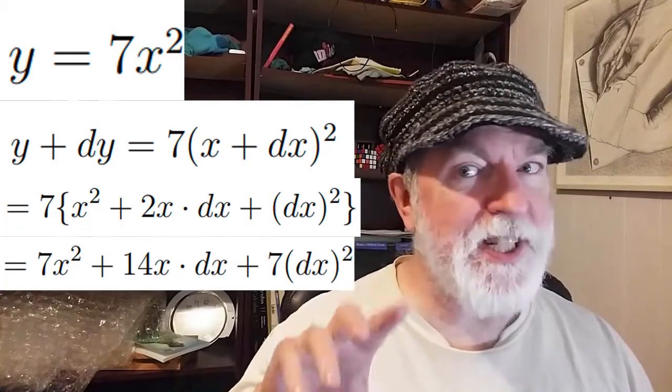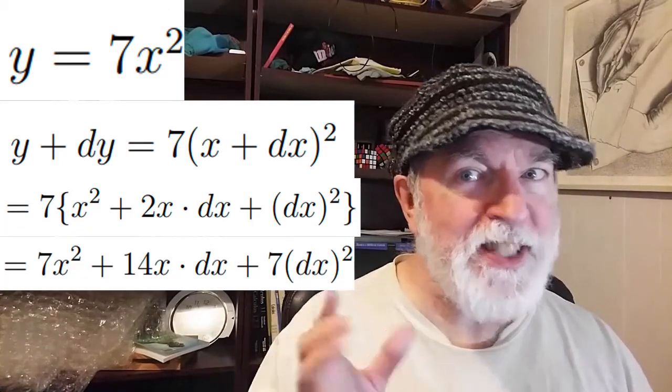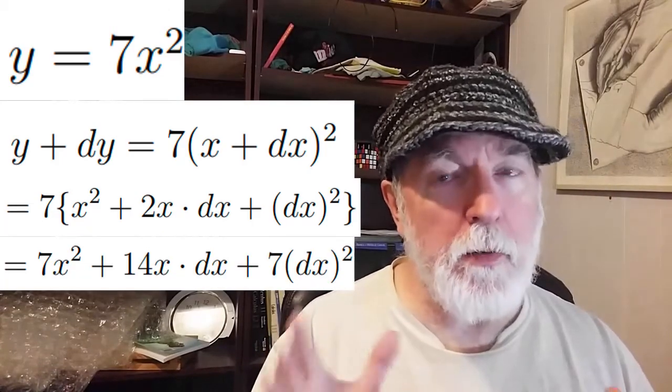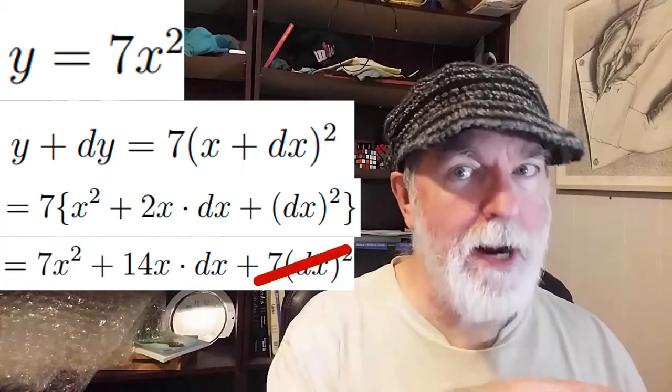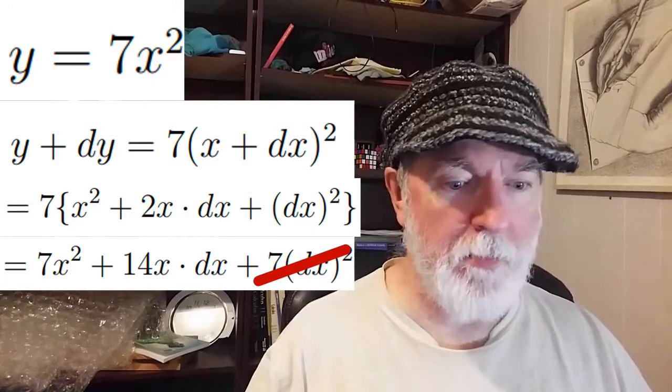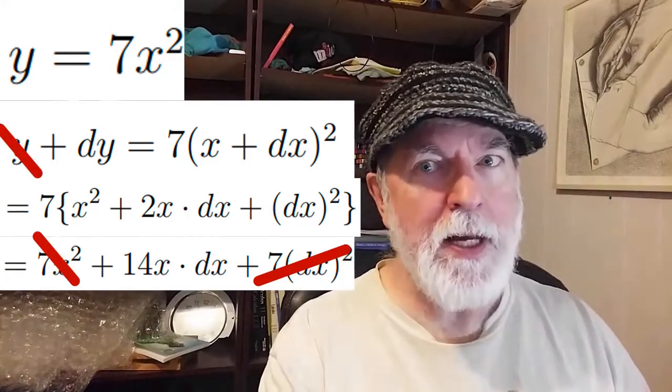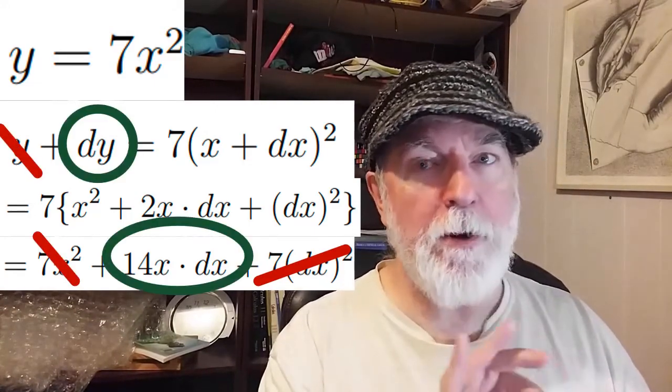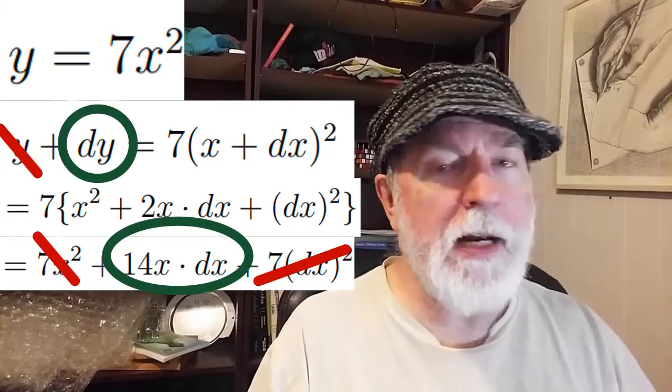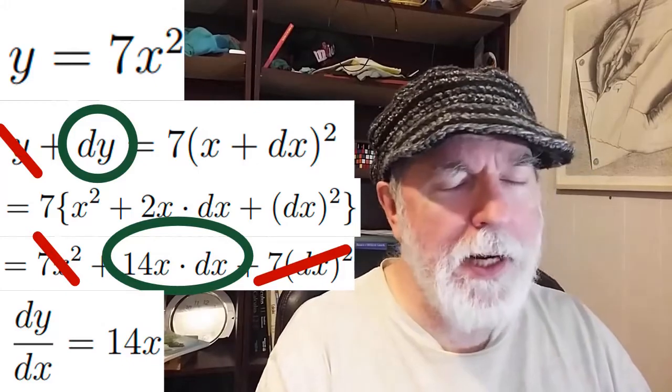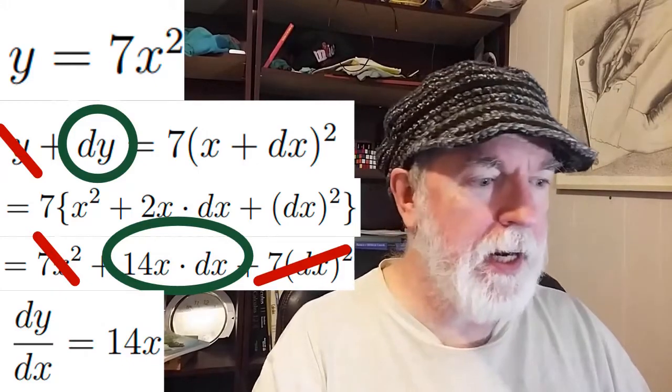Now what do we do with that 7 dx squared? 7 of almost nothing is still almost nothing. So now we remove the original y on the left, 7x squared on the right, and look what we end up with. dy equals 14x times dx. Scoot the dx over to the other side, and we've got dy by dx is 14x.